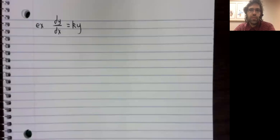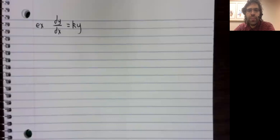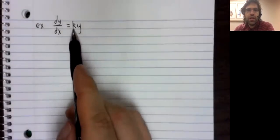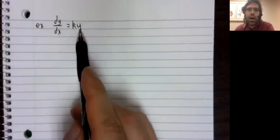In this video, let's do two examples of separation of variables. Here is a classic little differential equation. It shows up in a lot of applications: dy/dx equals a constant k times y.